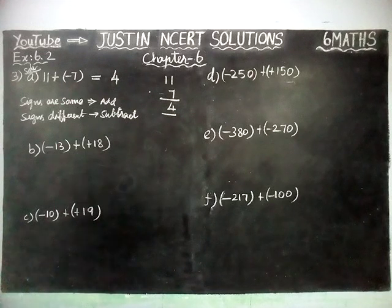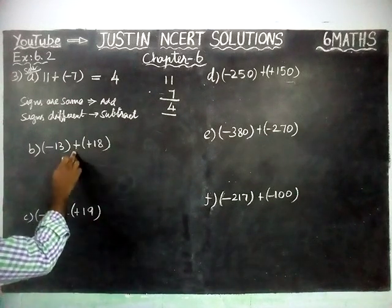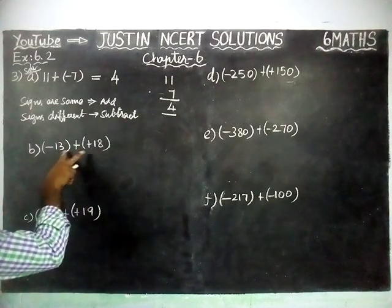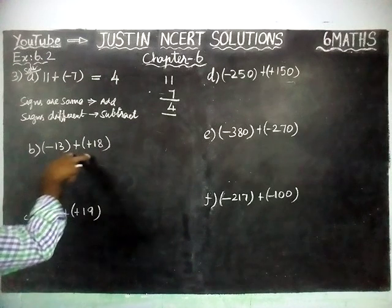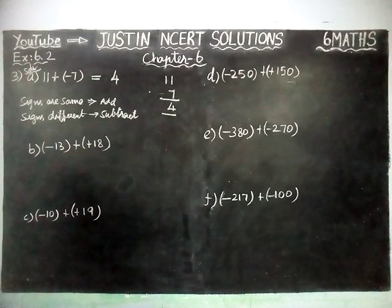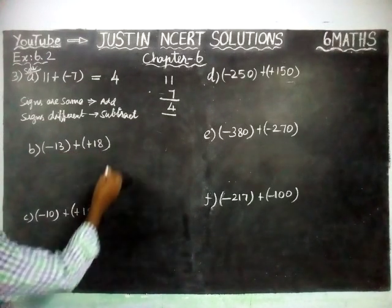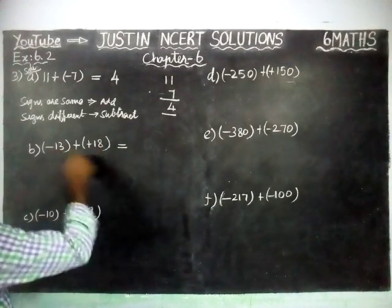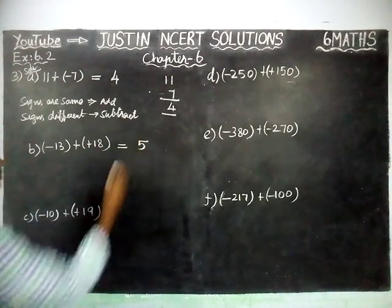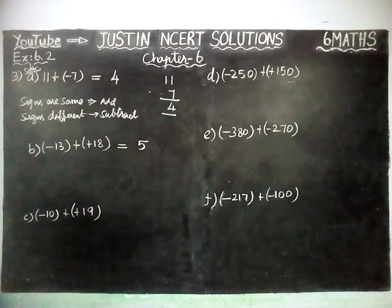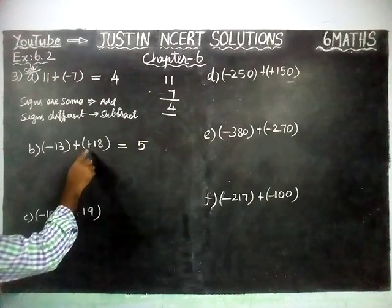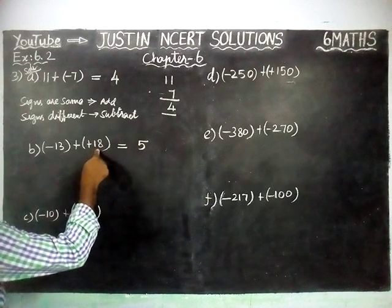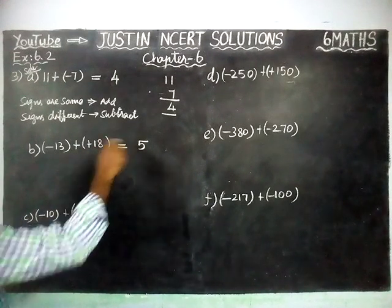Second question: minus 13 plus plus 18. Signs are different, so we have to find the difference. 18 minus 13 is equal to 5. The greatest number is 18, and in front of 18 there is a plus sign. So, plus 5 is the answer.